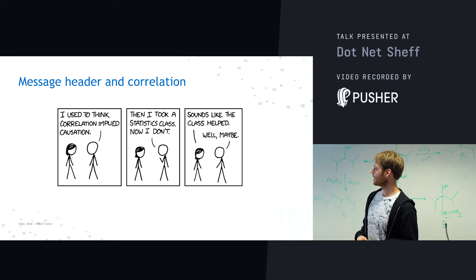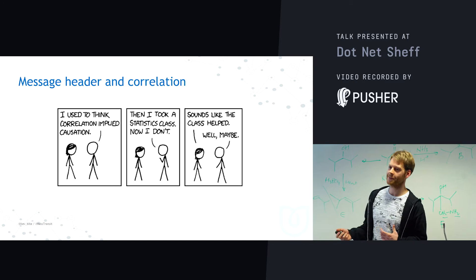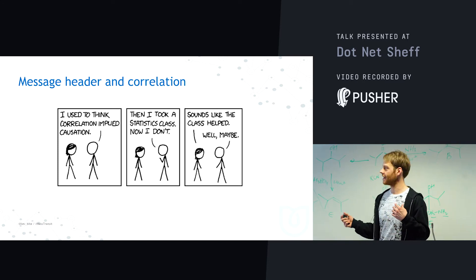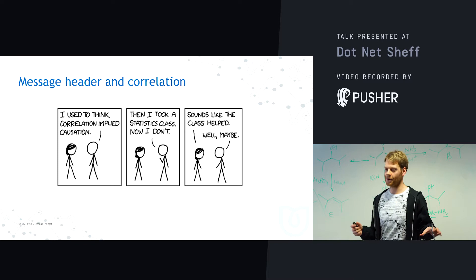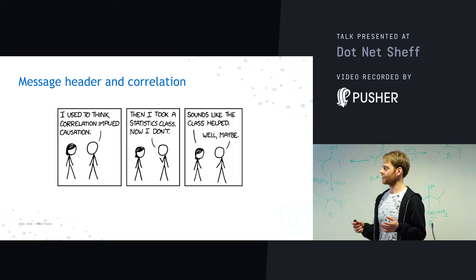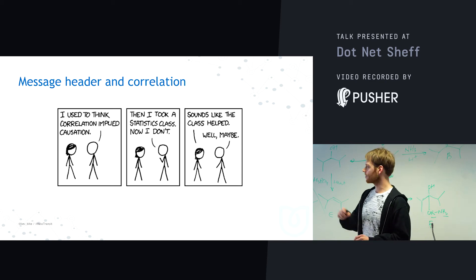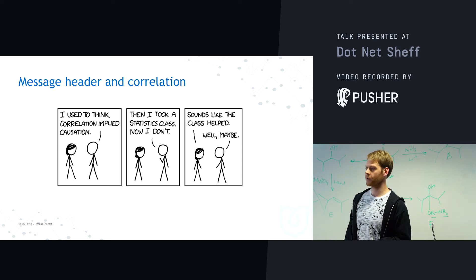Message headers and correlations: when debugging a message-based system, it's hard to correlate messages happening in one system to another. MassTransit deals with that for you by putting correlation IDs on everything, so you can trace messages along the actual processing.